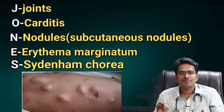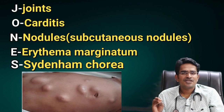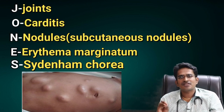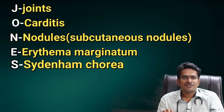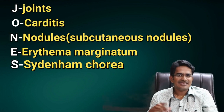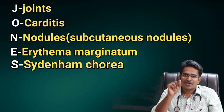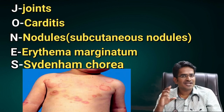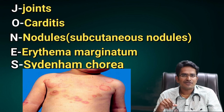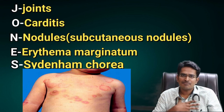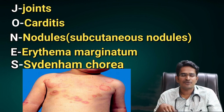Another important feature is subcutaneous nodules, which appear in the first or second year. There is also Erythema Marginatum — a skin rash that is round in shape, reddish, and slightly raised. The trunk and legs are commonly affected.